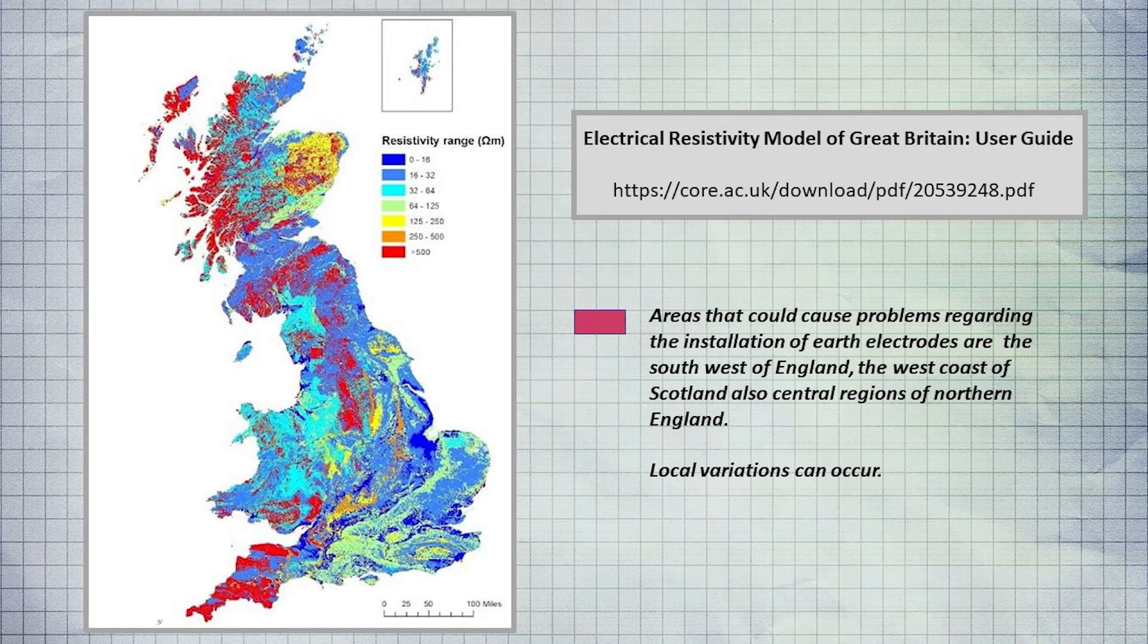This is a useful link to give you an idea what to expect regarding the resistivity of the soil in the area where you are installing the earth rod. It is a guide to general conditions and it should be borne in mind variation within a particular area may occur. Other geographical features that could be problematical is a restriction on the depth of rod achievable.